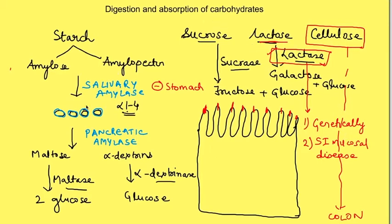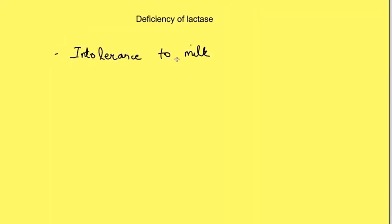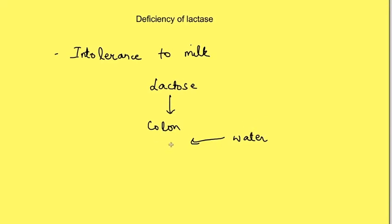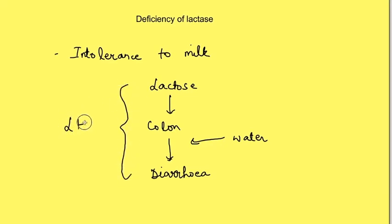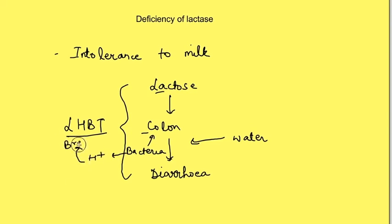In these cases, there is intolerance to milk products because they contain lactose. Undigested lactose enters the colon where it draws water in by osmosis, leading to diarrhea. Lactose intolerance can be assessed by the lactose-hydrogen breath test. Undigested lactose in the colon is acted upon by bacteria, releasing hydrogen which is absorbed into the blood and then excreted into the breath. Measurement of exhaled hydrogen after a standard dose of lactose indicates lactose intolerance.